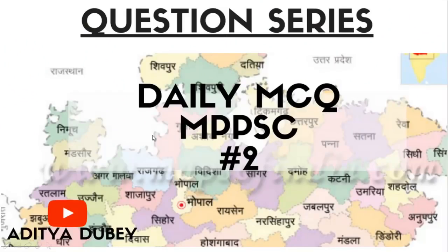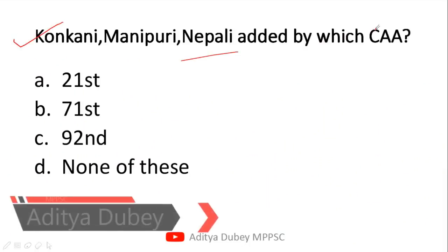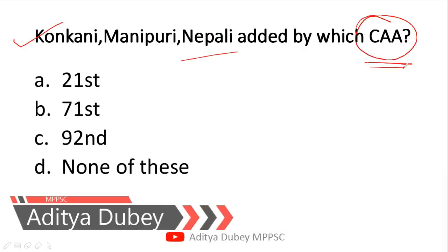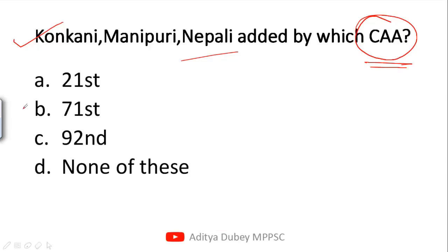Hello guys, welcome back to another daily MCQ video part 2. My name is Aditya Dubey. In this topic we will discuss some important questions for MPPSC. The first question is: by which constitutional amendment act were Manipuri and Nepali added? The right answer is option B, which is the 71st Constitutional Amendment Act.